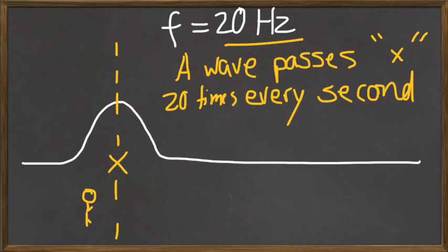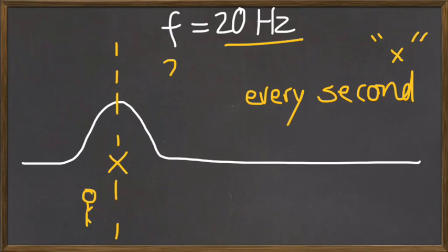If the frequency of the wave is 20 hertz, that means a wave passes X 20 times every second. Or, to put it in other words, 20 waves pass X every second.